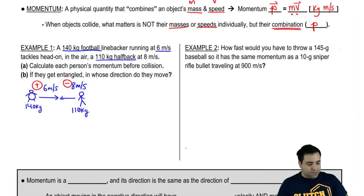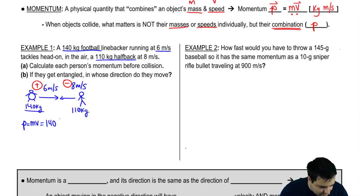Part A says calculate each person's momentum before the collision. So momentum is just P equals MV. So P here, the mass here is 140. And the velocity is 6. And if you multiply these two numbers, you get 840. I'm going to call this P1. And then P2, this is guy 1. This is guy 2. P2 is MV as well. But with this guy's information, so 110. And the velocity is negative 8. This is negative 880.